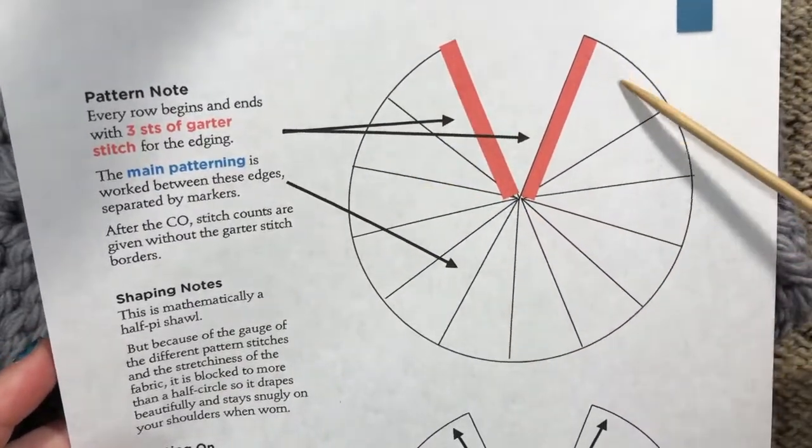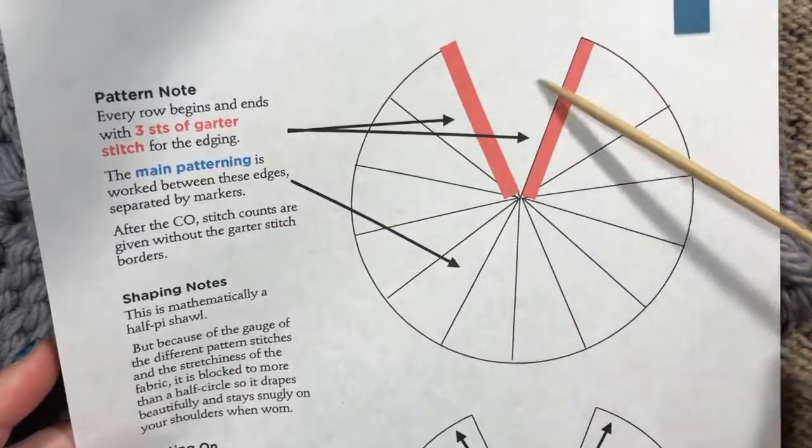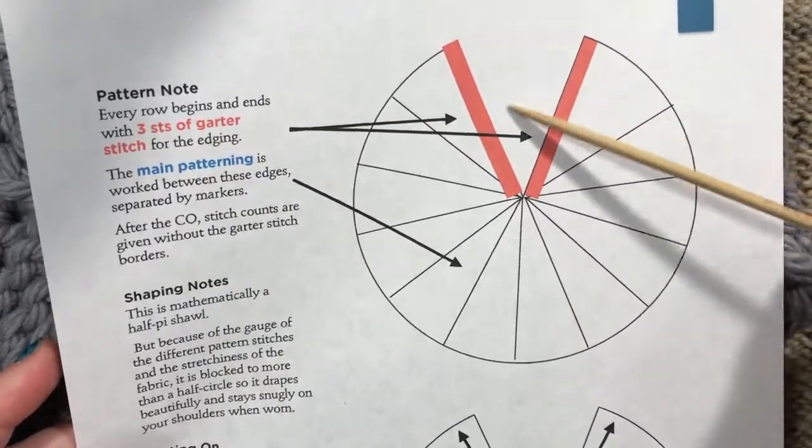This is more or less the shape of the finished shawl. It might be a little bigger depending on how you block it. This is the opening.